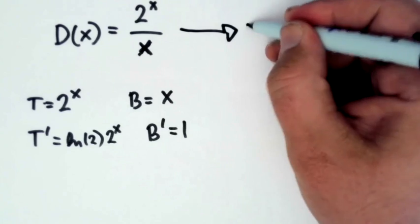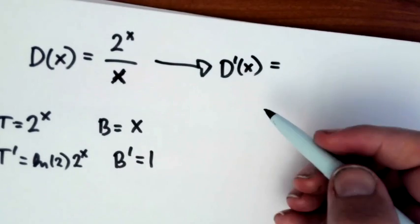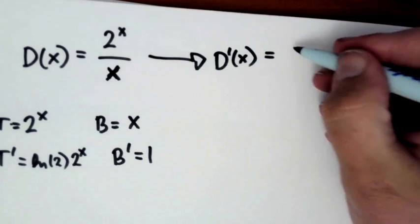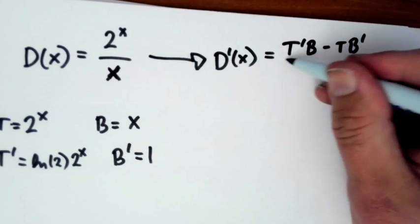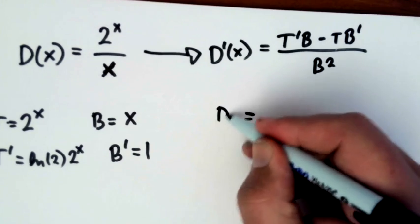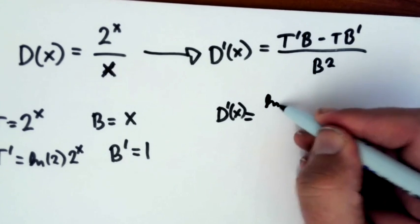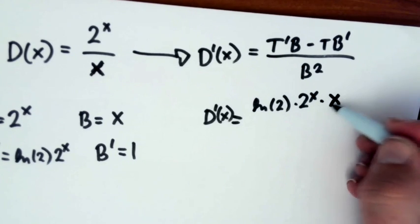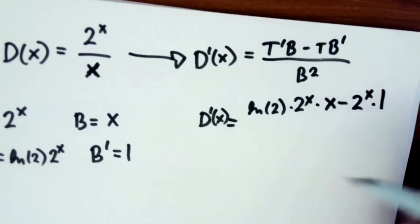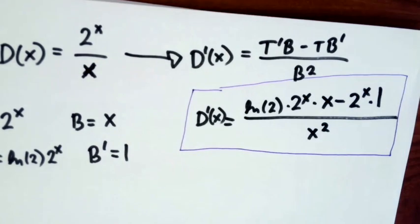Now I'm going to plug in to my pattern, and I'm telling you, if you want to learn this pattern, just keep writing it out, even if you have to copy it from somewhere. If you write it out every time you need to use it, and don't try to memorize it without writing it down, you'll remember it. So D prime of x is equal to ln of 2 times 2 to the x times x minus 2 to the x times 1 all over x squared.